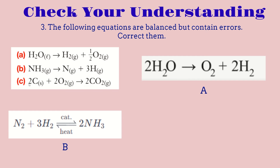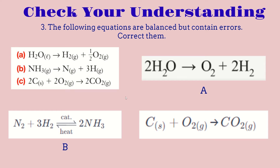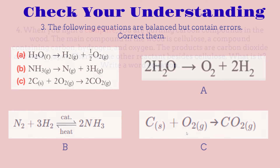For the third equation, we have carbon plus oxygen equals carbon dioxide. The reason this is wrong is because the coefficient of two in front of all terms is unnecessary. If we remove them, it is the same thing. So the correct answer is just C + O₂ = CO₂. The coefficient of two was unnecessary, and this is the correct answer. This summarizes question number 3.